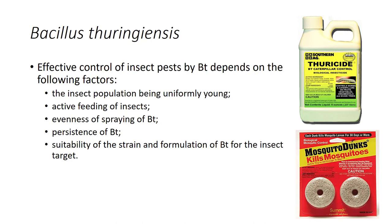Effective control of insect pests by Bt depends on the following factors: the insect population being uniformly young so as to be susceptible; active feeding of insects so that they consume a lethal dose; evenness of spraying of Bt; persistence of Bt, especially lack of denaturation by ultraviolet light; susceptibility of the strain; and proper formulation of Bt for the insect target.